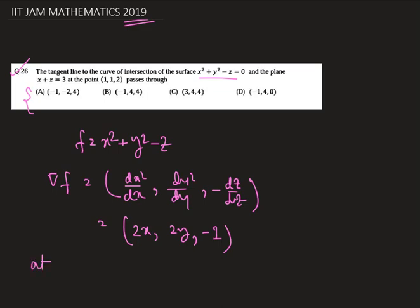Now at the point 1, 1, 2 as given, the tangent line to the curve of intersection of the surface and the plane at this point passes through which of these points. Therefore we put this value 1, 1, 2 in delta f operator function. Therefore we get delta f is equals to 2, 2, minus 1.